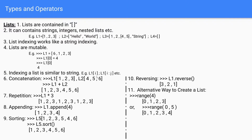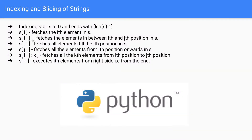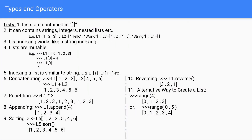Indexing a list is similar to a string: L1[i], L1[i:j], etc. Concatenation means we can add two lists using the plus sign. For example, [1, 2, 3] + [4, 5, 6] will print [1, 2, 3, 4, 5, 6]. For repetition, you use the asterisk sign: [1, 2, 3] * 3 will print the list three times.